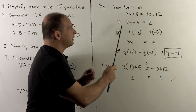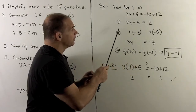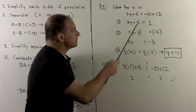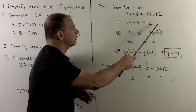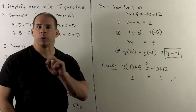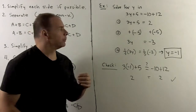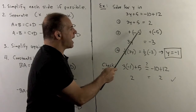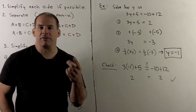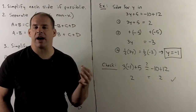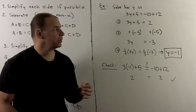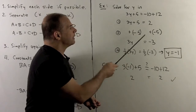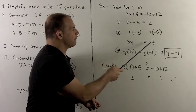I can't simplify anything further on either side. So we go to the next step, which is to isolate all the terms of y. I want to push the 5 to the other side. To cancel out this plus 5, I add a minus 5 to both sides to preserve the equality. So the plus 5 goes away, and 2 minus 5 equals minus 3.